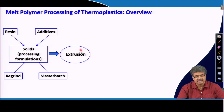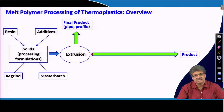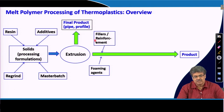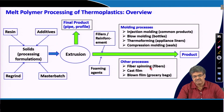We melt the polymer and perform extrusion, from which we can make some simple products like pipes and sheets. In most cases, the extruded material is followed by a second molding step where we add other components like fillers, reinforcements, sink agents, and foaming agents. Molding can be of different types: injection molding for common products, blow molding, thermoforming, compression molding, and other processes like fiber spinning, film casting, and blown film for grocery bags.